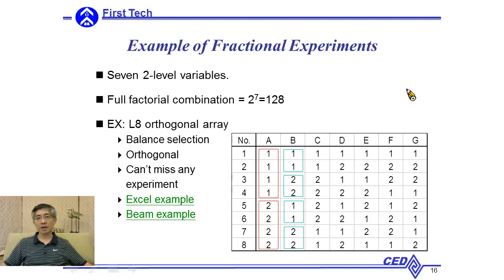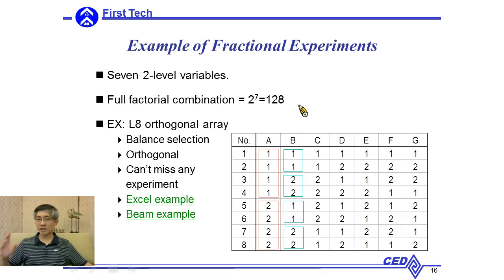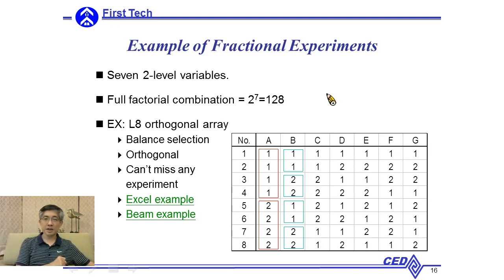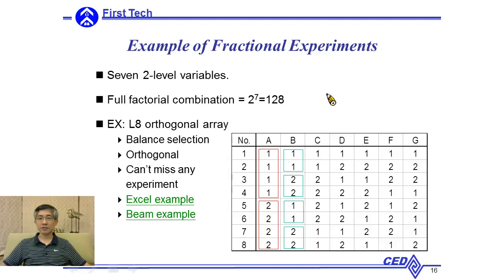Let me give you an example for fractional factorial experiments. If you have seven two-level factors, then the total number in the full factorial will be 128. And if we just select eight from this 128, these eight experiments are part of, or a fraction of, the full factorial. Since we just want to select a fraction of the experiments, the selection of the experiments will be very important. This selection has to be very balanced and very symmetric so that each factor can be determined very objectively.